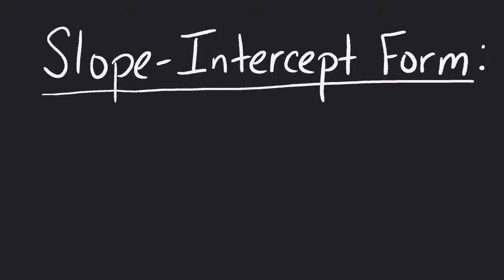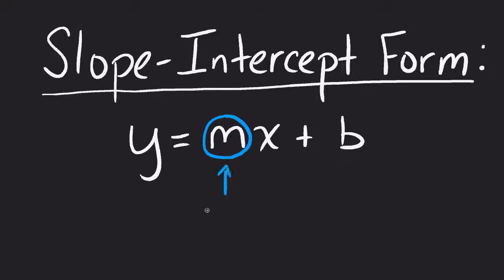Slope-intercept form is a very common form to see a linear equation in, and that's basically y equals mx plus b. Like our other forms, the title makes sense because we need to have the slope (m) and this value (b), which is the y-intercept.